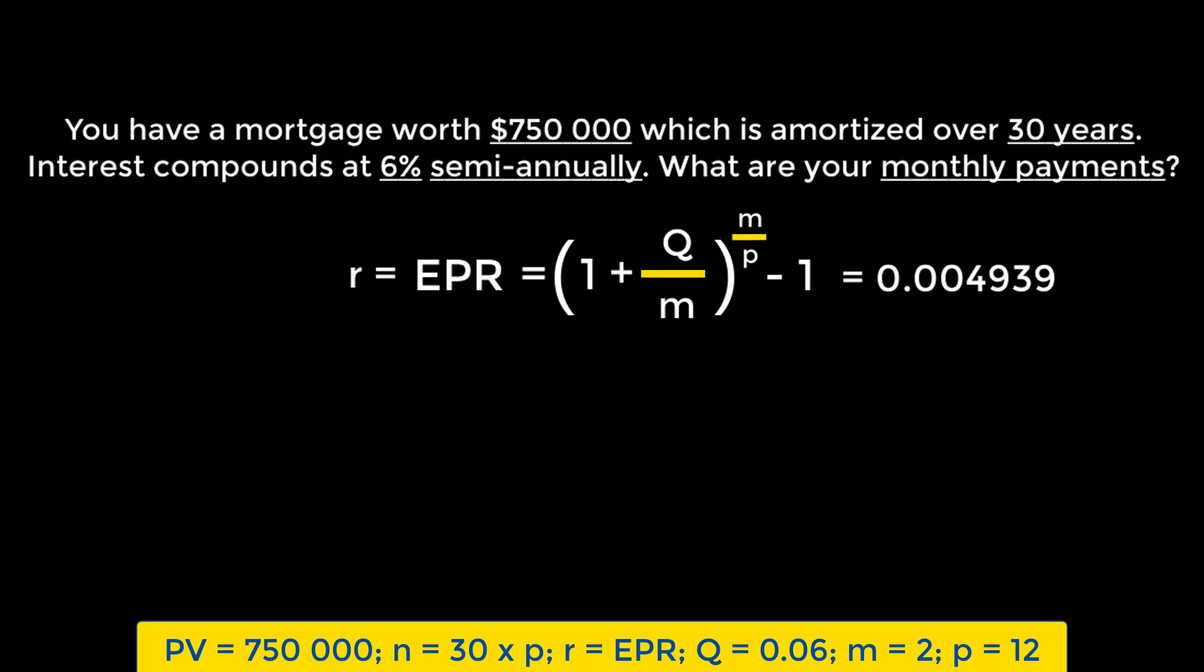This gives us our EPR of 0.004939. Now again, mortgages are ordinary annuities, so we're looking for values to plug into the present value for annuities formula, rearranged to solve for C, or the value of the payment. Present value is equal to $750,000. The R value is equal to the EPR, which is what we just calculated. N is equal to the number of periods in total, and we would get that by multiplying the payments per year, which we know are monthly, so that would be 12, by 30 years. That should give us 360 periods. Therefore, our payments each month should be $4,461.39.